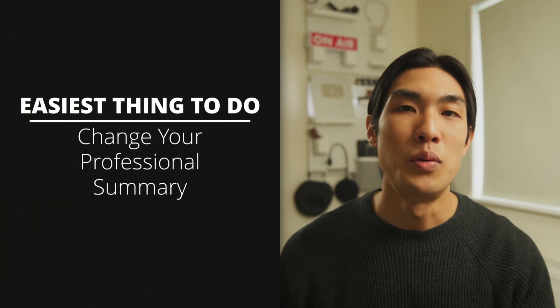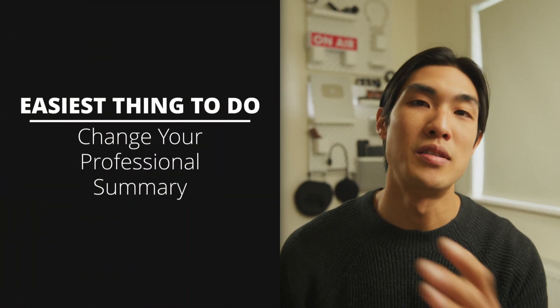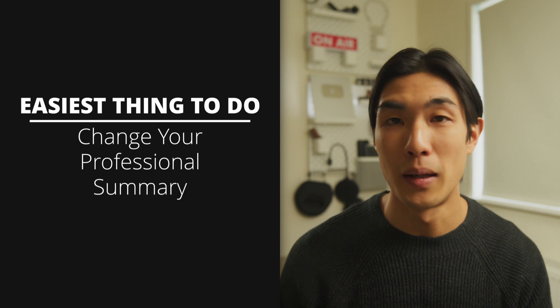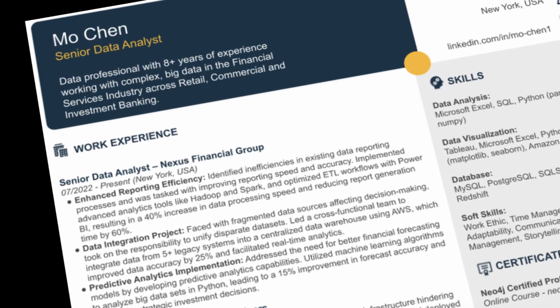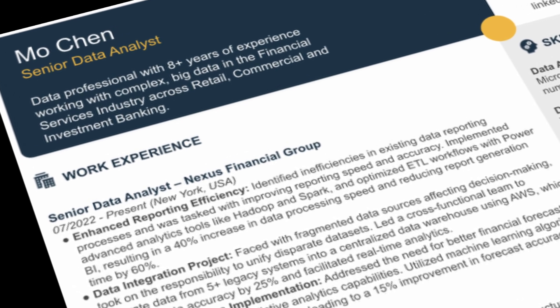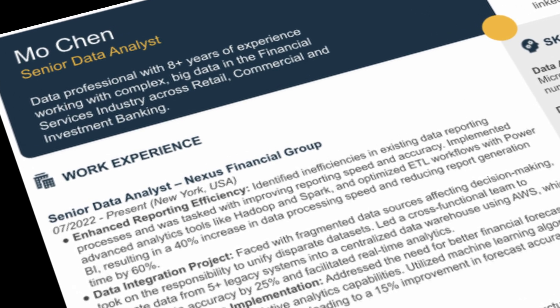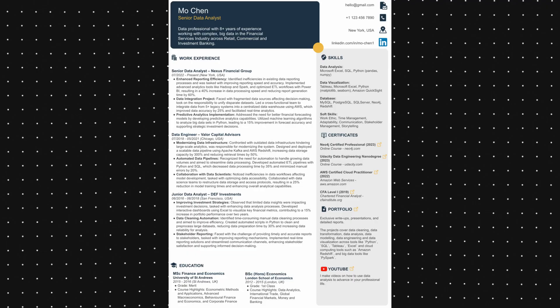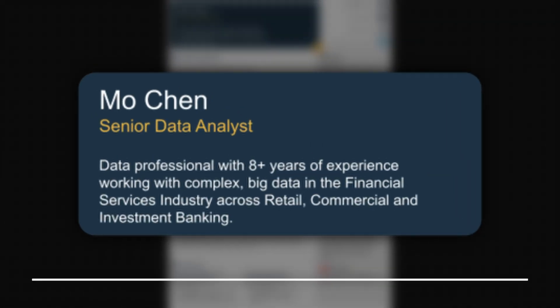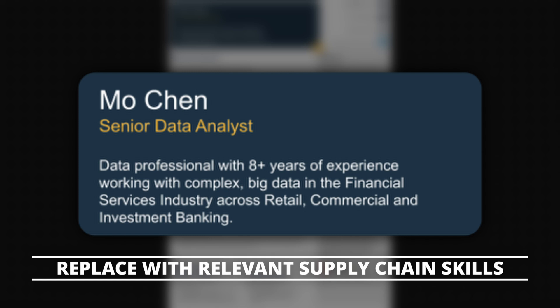The easiest thing to do is just change your professional summary based on the job you're applying to. In my resume, I noted many years of experience working in the financial services industry because this resume is tailored for a data analyst job in banking. But if I was applying to a supply chain analyst role, I would definitely change this to say something about my relevant supply chain experience and achievements.